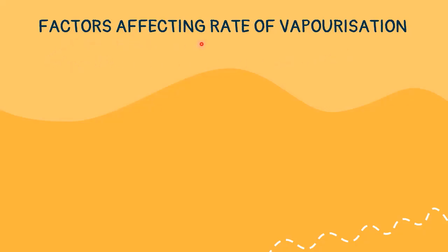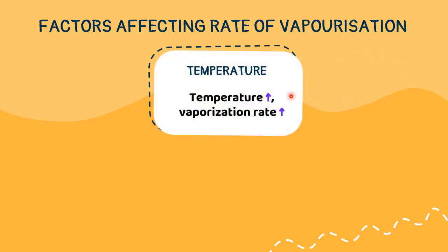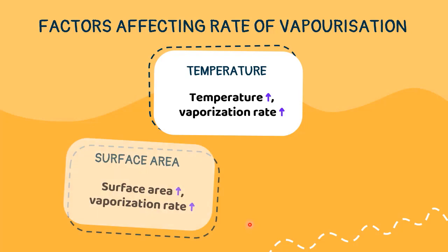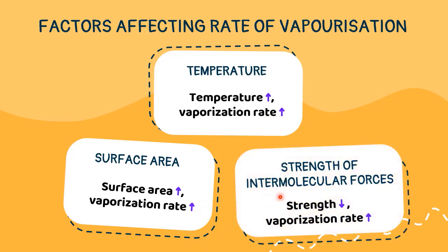Now let's look at the factors affecting the rate of vaporization. Vaporization is directly proportional to temperature. As the temperature rises, the kinetic energy of molecules also increases, and as a result, the force of attraction reduces. Hence, with an increase in temperature, the rate of vaporization increases. With an increase in surface area, the rate of vaporization also increases, as more particles are exposed to the change in temperature. High temperature and large surface area will cause the strength of intermolecular forces to become weaker, resulting in a high vaporization rate.